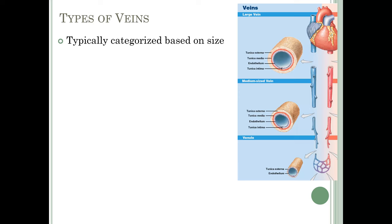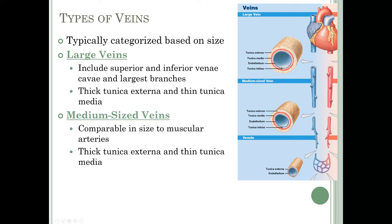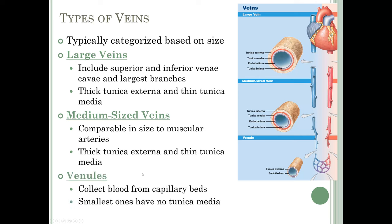The very large veins — like the superior and inferior vena cava and their largest branches — have a very thick tunica externa and a relatively thin tunica media. Medium-sized veins, comparable in size to muscular arteries, also have a thick tunica externa and thin tunica media. Venules, which collect blood from capillary beds to start it back to the heart, are the most different — the smallest venules have no tunica media at all, just a tunica externa surrounding an endothelium.